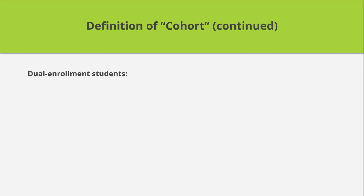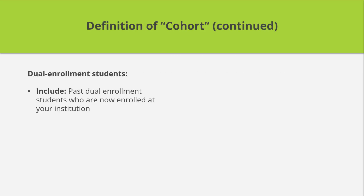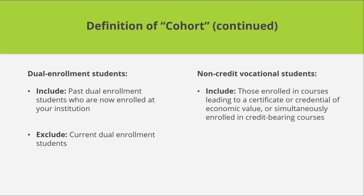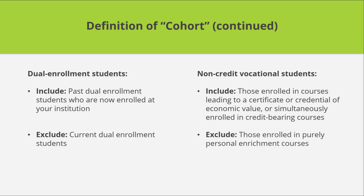For dual-enrollment students, include past dual-enrollment students who took a course or courses at your institution while simultaneously attending high school. But exclude current dual-enrollment students — those taking a course or courses at your institution while simultaneously attending high school. For non-credit vocational students, only include those who enrolled in courses that could lead to an occupational certificate, industry certificate, or other credential of economic value, as well as those simultaneously enrolled in credit-bearing courses. Exclude non-credit vocational students enrolled in purely personal enrichment courses.